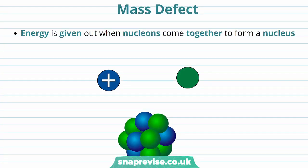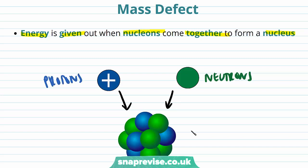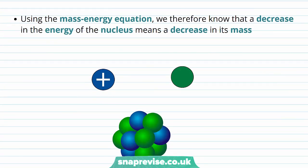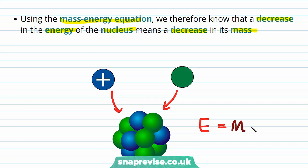Now let's define the mass defect of a nucleus. Energy is given out when nucleons come together to form a nucleus — so protons and neutrons can form a nucleus and energy will be given out. Using the mass-energy equation, we therefore know that a decrease in the energy of the nucleus means a decrease in its mass. From E = mc², a decrease in energy means a decrease in mass.